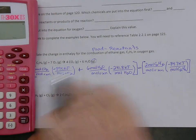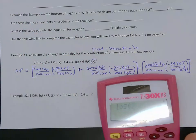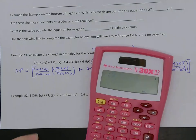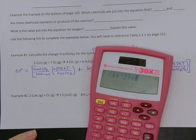So here's how I would put it in my calculator. So I've got four times negative 394.